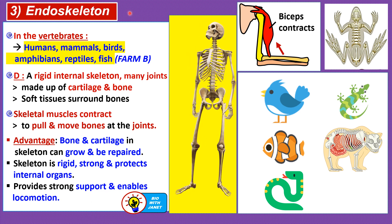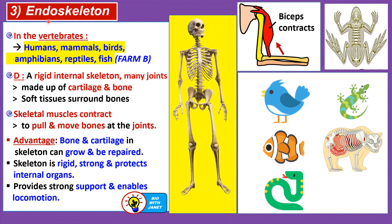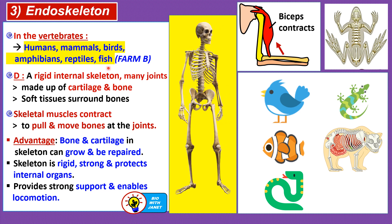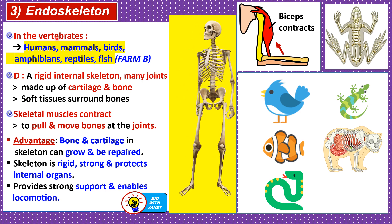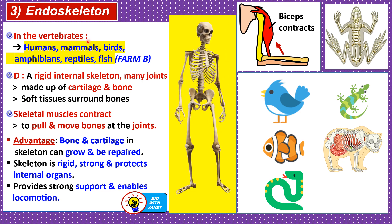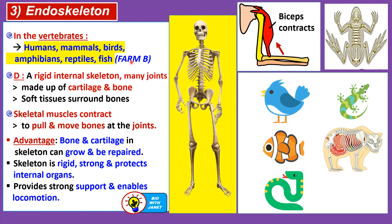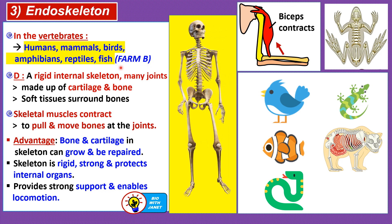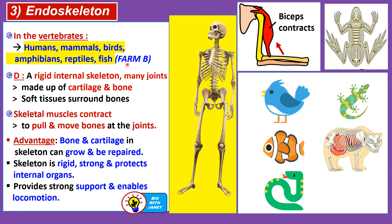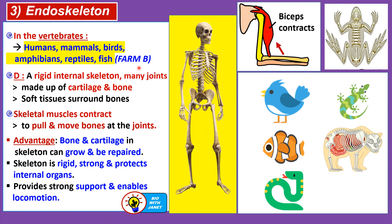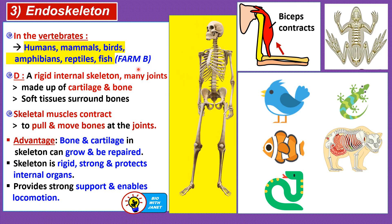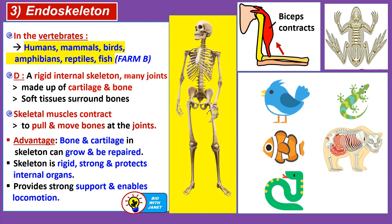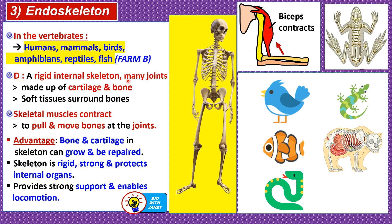The third type of skeleton is the endoskeleton — 'endo' means inside, so this skeleton is found inside the body. It is found in vertebrates, which have a backbone. There are five classes of vertebrates — remember the acronym FARMB: Fish, Amphibian, Reptiles, Mammals, and Birds. Humans are in the category of mammals, so we also have an endoskeleton.